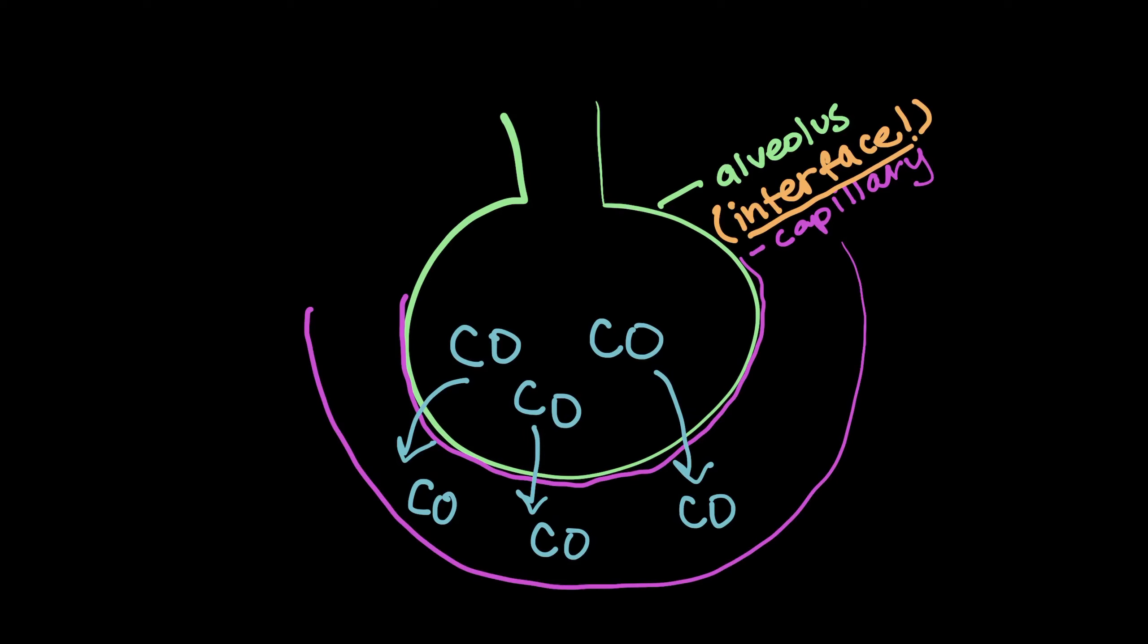How good those air sacs get the oxygen out of the air and into the bloodstream. So if you have a thickening of your alveolar wall, say from fibrosis, pulmonary edema, pneumonia, really anything like that, then that can cause less CO in this case or oxygen to be transferred across the membrane.